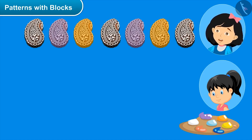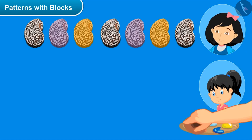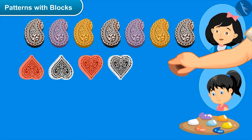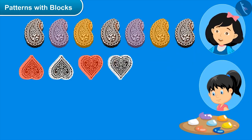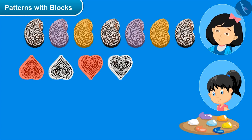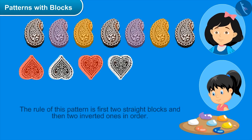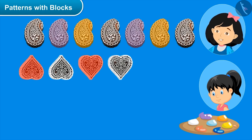Now look at this pattern and tell me which rule it is following. Wow sis, what a beautiful design pattern you have made by printing this block straight and upside down! So what is the rule of this pattern? The rule of this pattern is first two straight blocks and then two inverted ones, in order. Yes, right! And by following this rule we can carry forward this pattern.